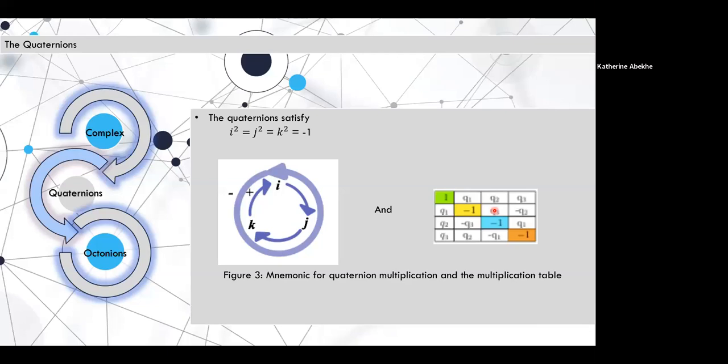Now we go on to discuss the octonions. The octonions satisfy i² = j² = k² = -1. It's a four-dimensional algebra, so that i times j is k, j times k is i, and so on. i times k is negative j, j times i is negative k, and so on.